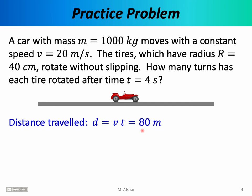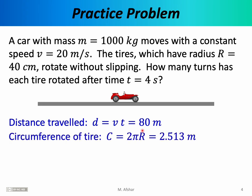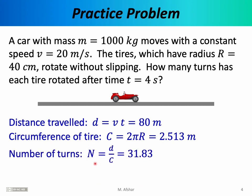With every rotation of the tire, the car advances one circumference worth of distance. The circumference is calculated by 2πr, substituting in the radius, remembering to convert 40 centimeters to meters. We find the circumference of the tires is 2.513 meters. We can now answer the question: if we're advancing 80 meters and one turn corresponds to 2.513 meters, we divide the distance by the circumference. The number of turns n is 31.83 turns.